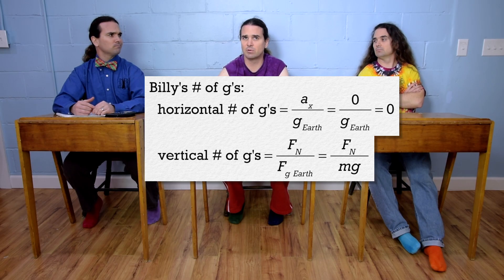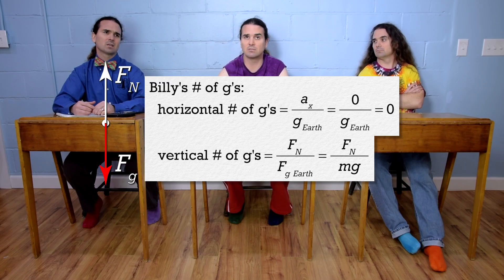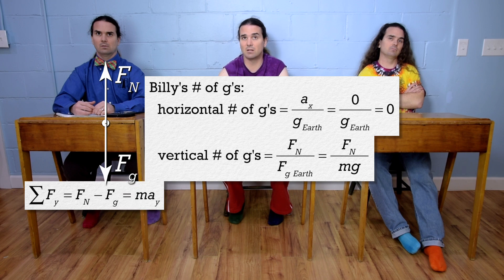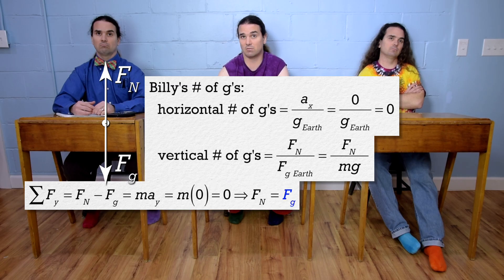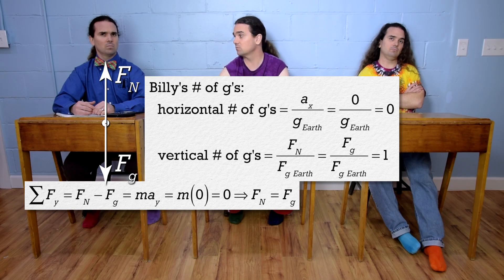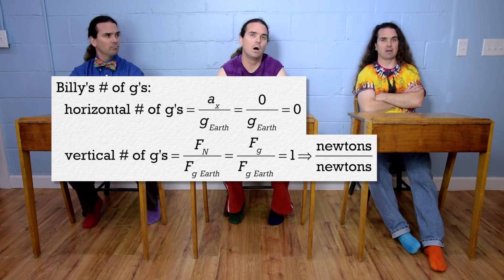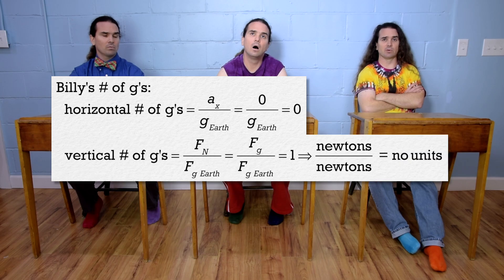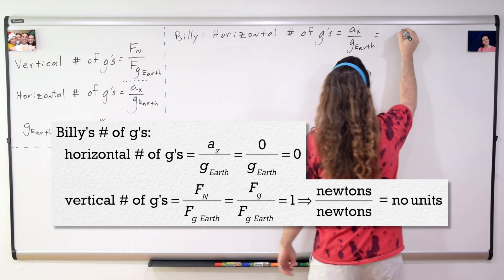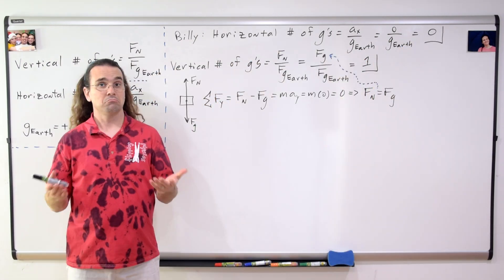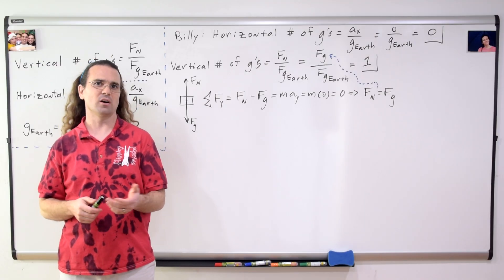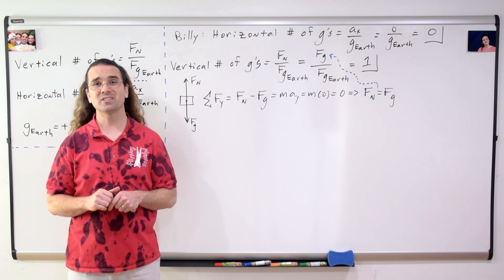But if we draw a free body diagram of the forces acting on you right now, we get force normal up and force of gravity down. The net force in the y-direction equals force normal minus force of gravity, which equals mass times acceleration in the y-direction. Your current acceleration in the y-direction is zero, so your force normal equals your force of gravity. Substitute that into the equation for vertical number of g's, everything cancels out and you get one. Your vertical number of g's is one. But what are the units? Number of g's has no units — it works out to be newtons divided by newtons, which cancel out. When you are at rest, you are experiencing zero horizontal g's and one vertical g.